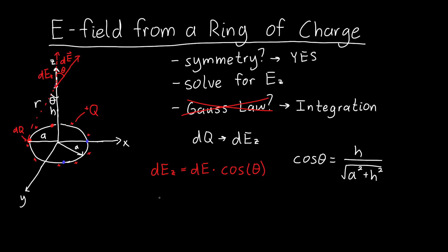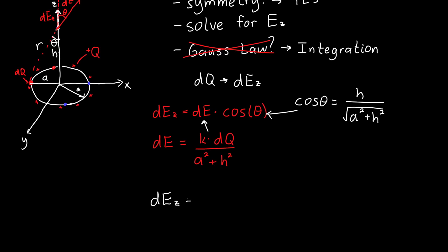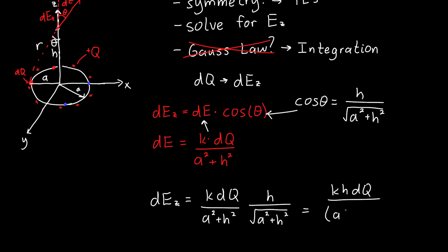All we have left is to find dE, and we use the point charge equation: dE equals k times dq divided by r squared, where r squared is a squared plus h squared. Plugging everything in, dEz equals k·dq over (a² + h²) times cosine theta, which is h over the square root of a² + h². Simplifying, dEz equals k·h·dq divided by (a² + h²) to the three-halves power, where a is the radius, h is the height, k is Coulomb's constant, and dq is the amount of charge.